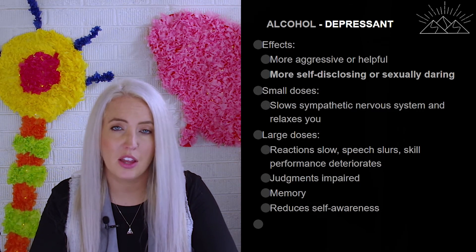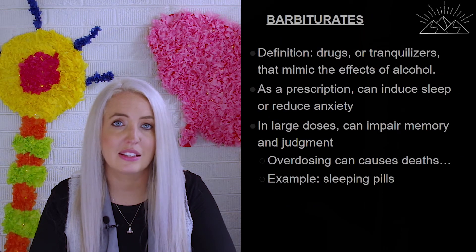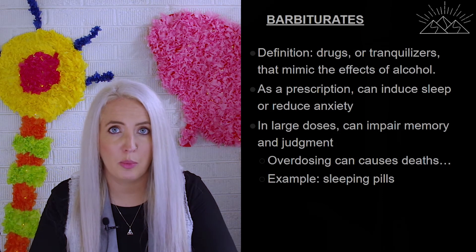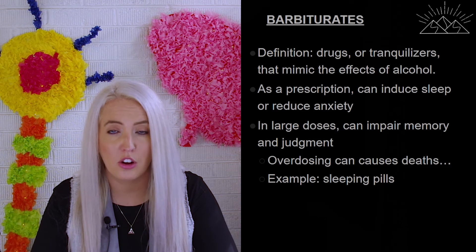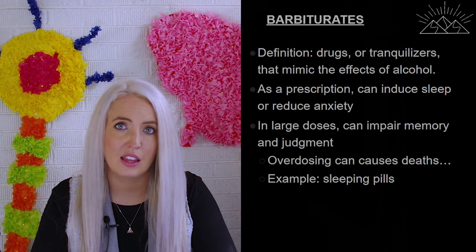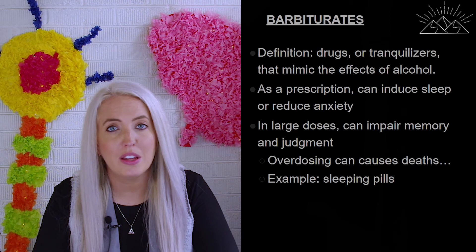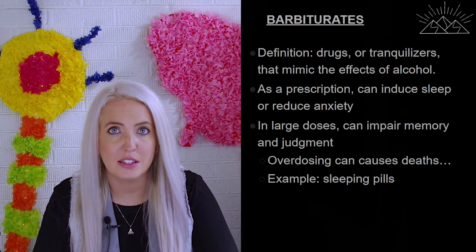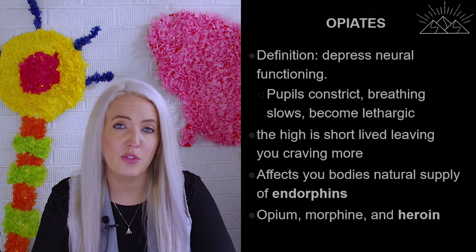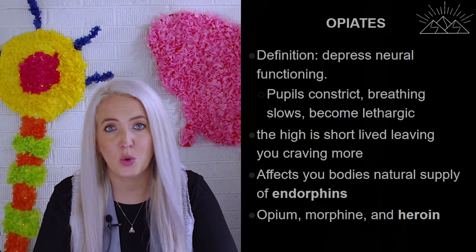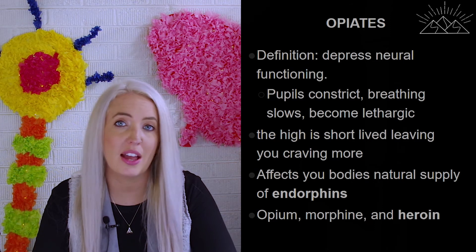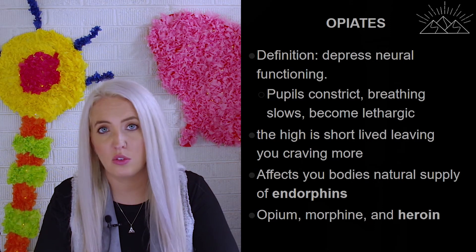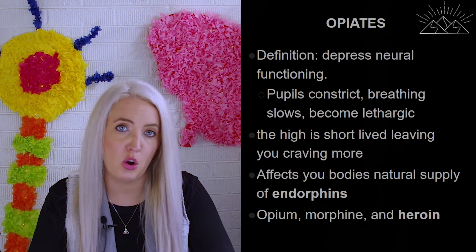Barbiturates are another type of depressant typically found in sleep aids. They help induce sleep or reduce anxiety, but in very large doses they can impair memory and judgment, and in overdose can cause death. Opiates are a third type of depressant — they depress neural functioning and act on our endorphin receptor sites. We often see them as pain-killing medications such as morphine; in illegal forms, opiates include opium or heroin.